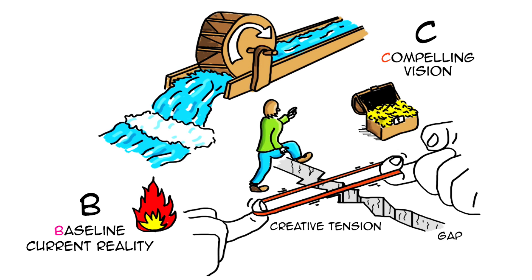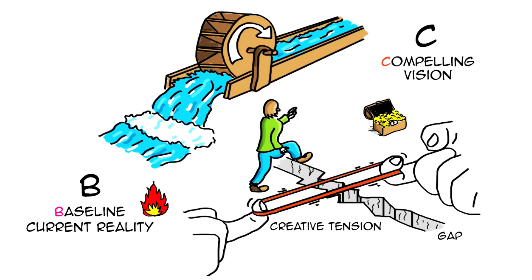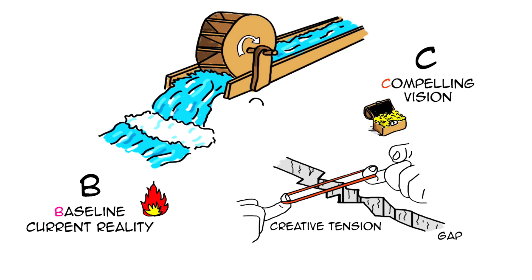Creating this tension upstream generates action and motion downstream. That's why it's important to be rigorous and honest while assessing our current situation and to be ambitious while creating our vision. Pretending that the current situation is better than it really is or creating a vision that is not very ambitious can feel more comfortable but it reduces the creative tension and therefore reduces our chances to generate action and motion in the right direction.